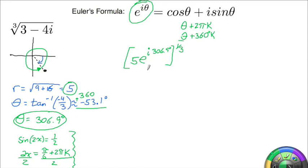I'll do that off to the side. So my modulus is now going to be the cube root of 5, or 5 to the 1 third power. e to the i, and then this gets kind of big. We're going to have our 306.9 degrees plus 360 degrees times k, all divided by 3.